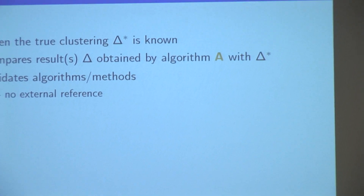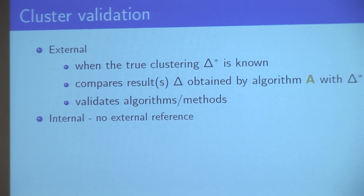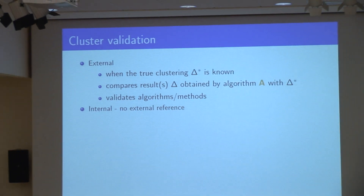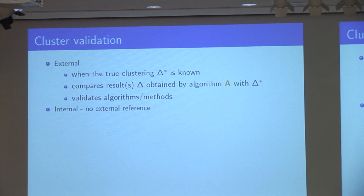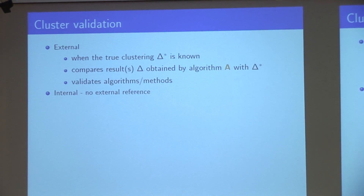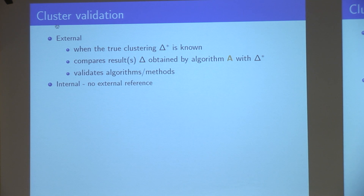There are two ways of validating a clustering. One is when we know the truth, and that's called external cluster validation. In some sense that's cheating, but it is possible sometimes to have labeled data and just test your algorithm against the true clustering. Internal validation is how good is the clustering by itself, without knowing what the true clustering should be.